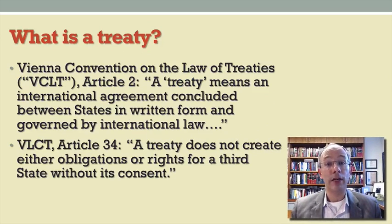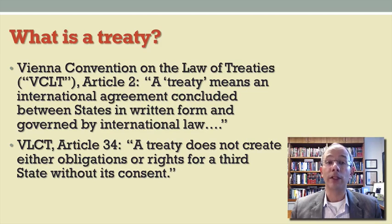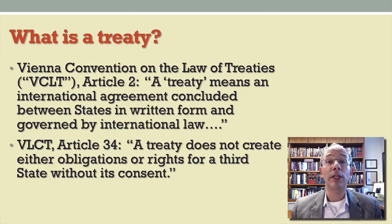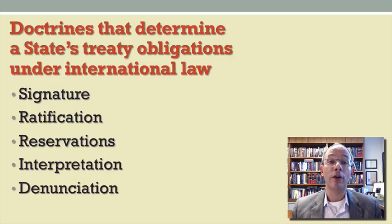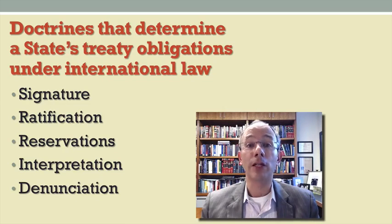What exactly is a treaty? It helps that we have an agreement that gives us an answer — the Vienna Convention on the Law of Treaties, often referred to by its abbreviation the VCLT. The VCLT contains a definition that a treaty is an international agreement concluded between states in written form and governed by international law. In VCLT Article 34, we see that a treaty does not create rights or obligations for a third state without its consent. So treaty law is very much grounded in the notion of state consent, which will animate the key doctrines: signature, ratification, reservations, interpretation, and denunciation.